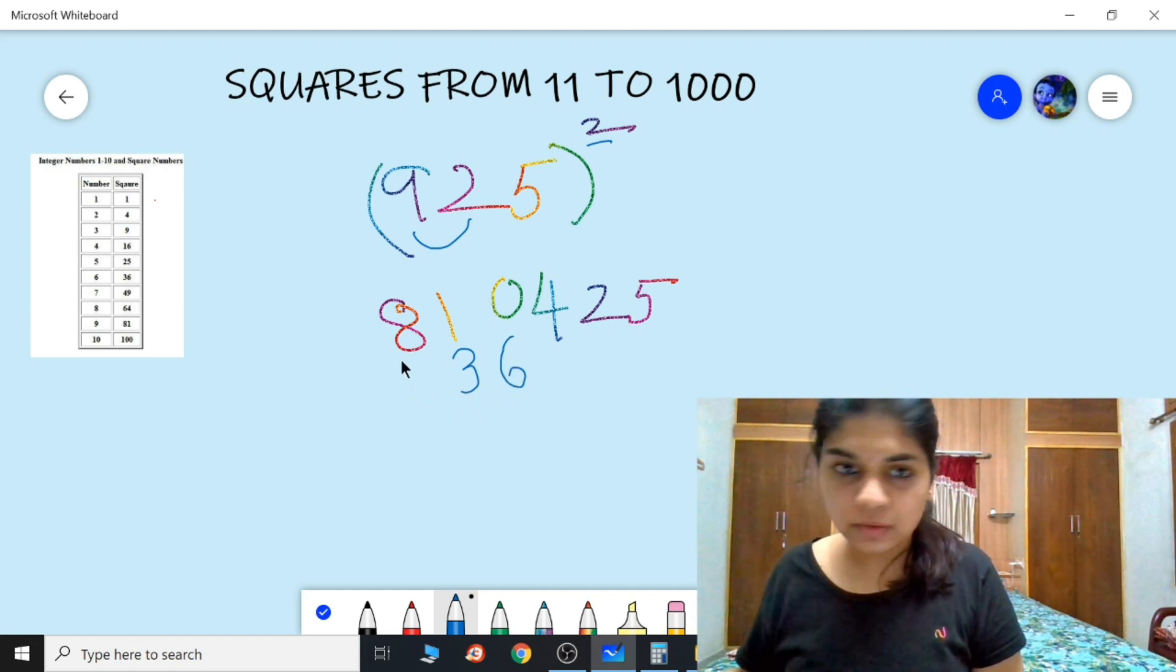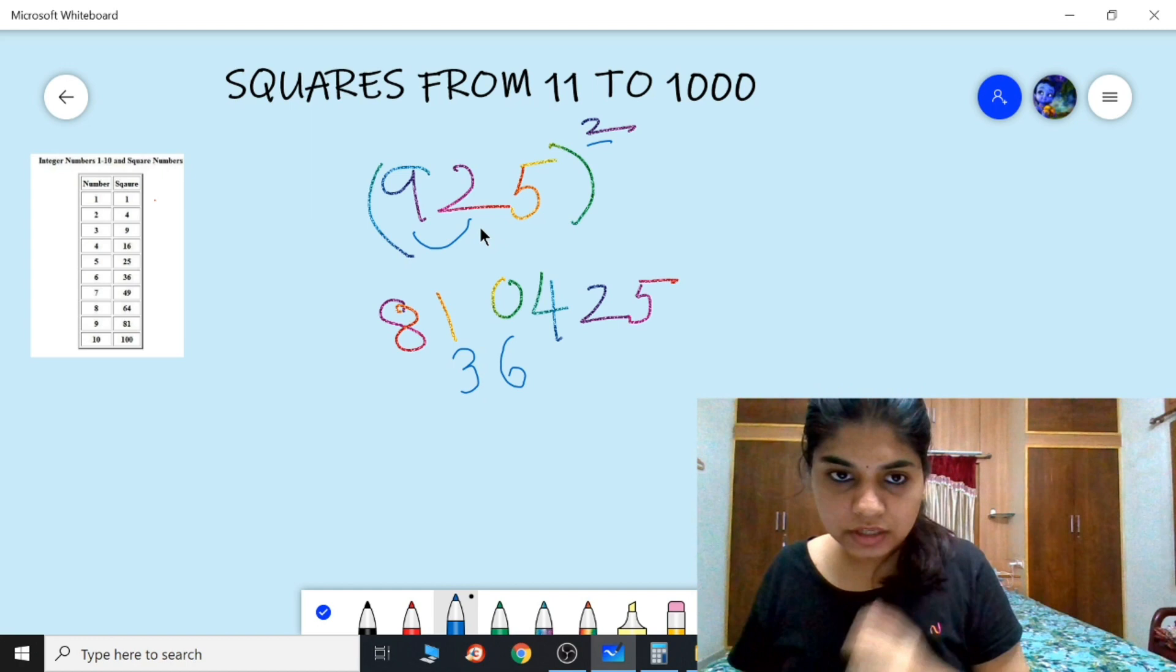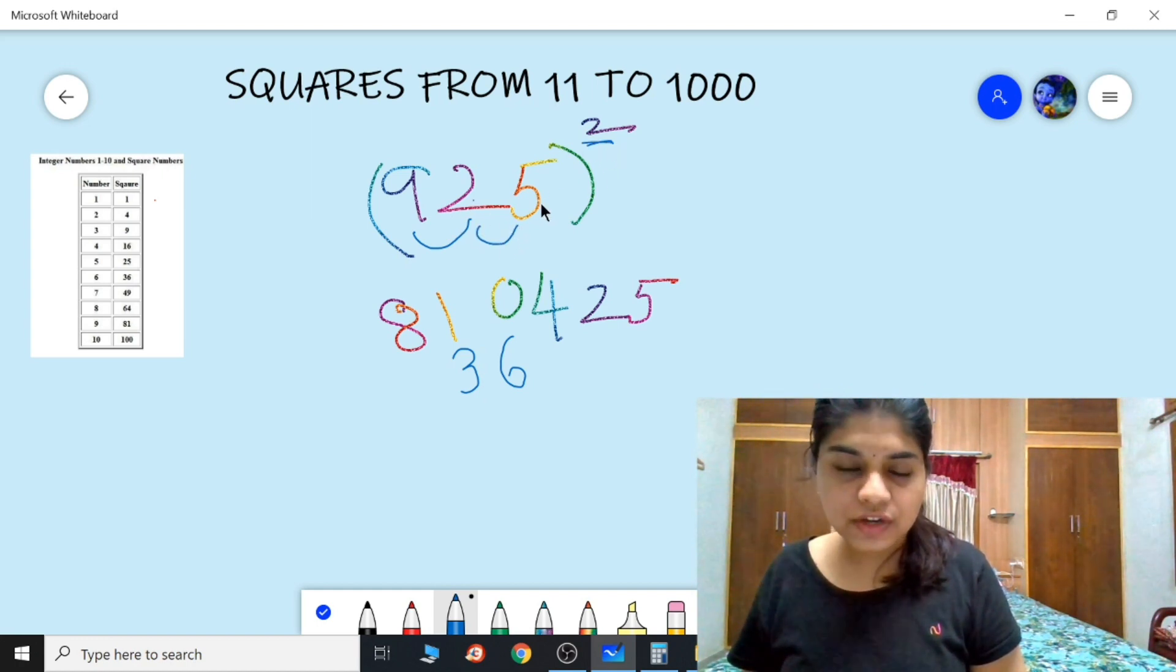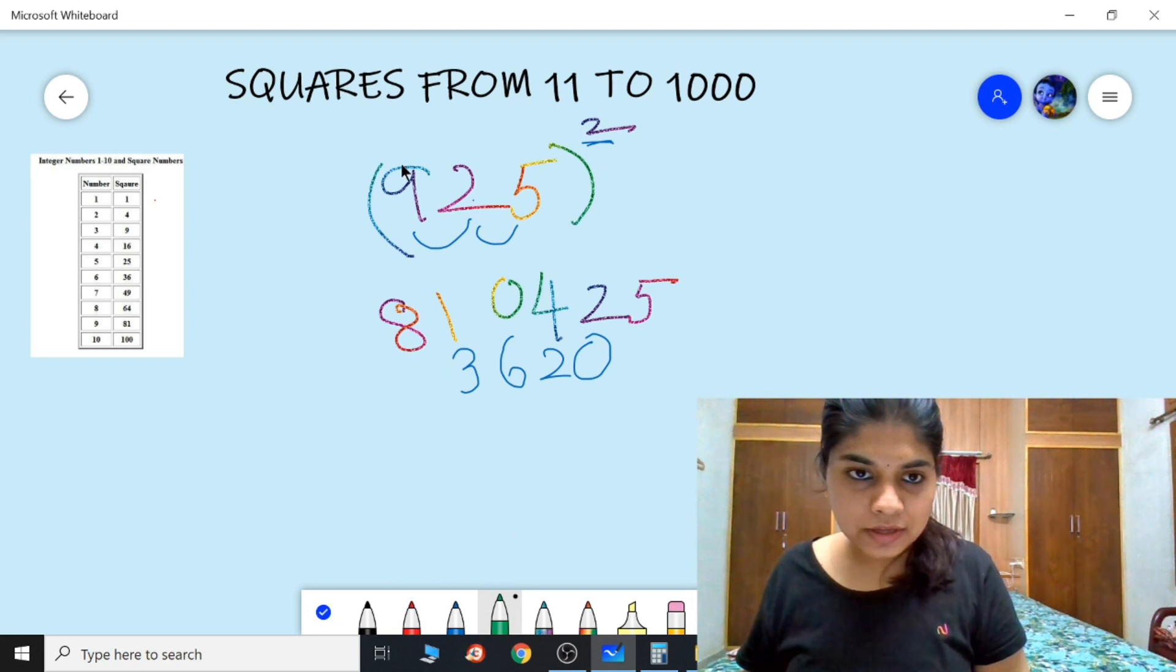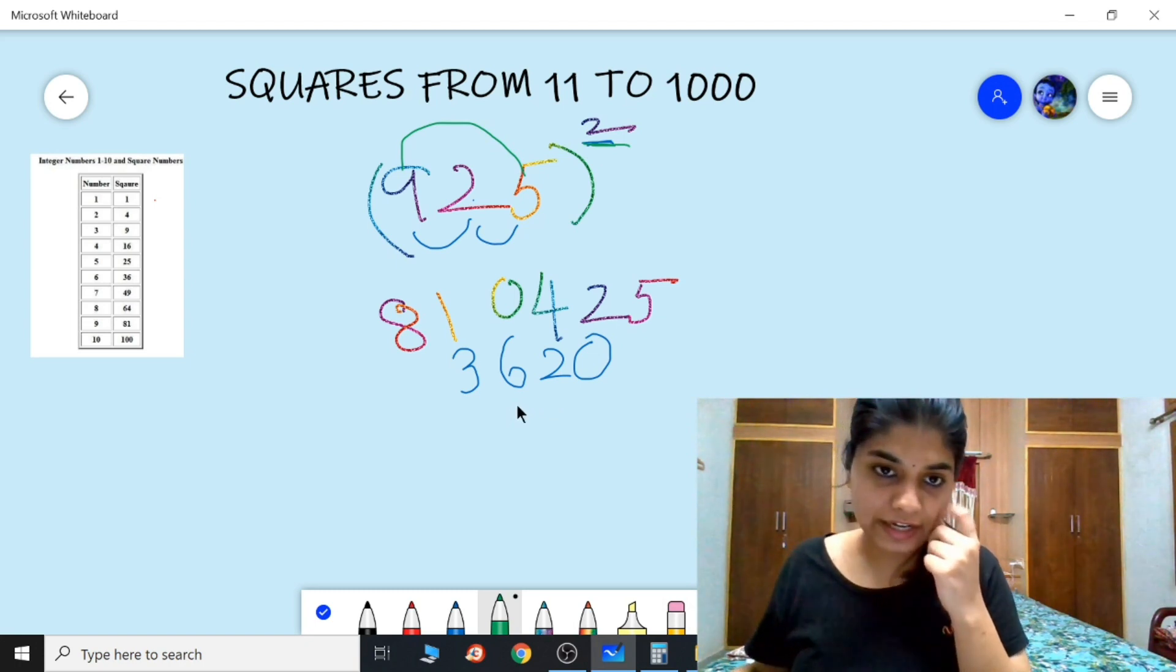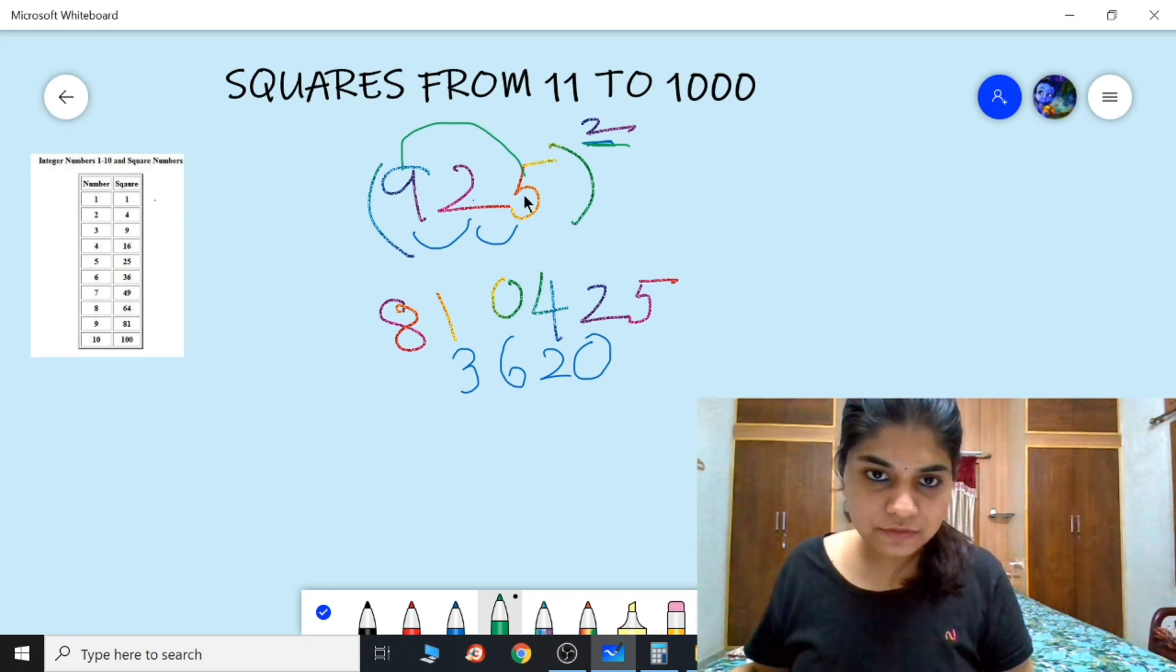Now I'm taking this. First we need to multiply 9 and 2 into 2. So 9 times 2 is 18, 18 times 2 is 36. Now 2 into 5 and then into 2. So 2 fives are 10, 10 times 2 is 20. The third step, these two into 2. This one must be written in the third line. So this is 45 and 45 times 2 is 90.